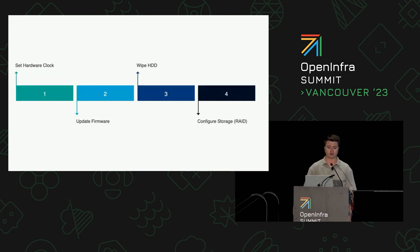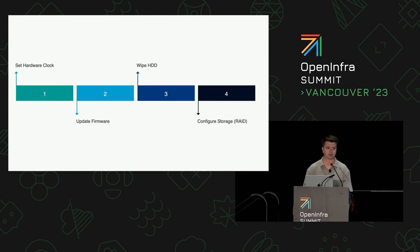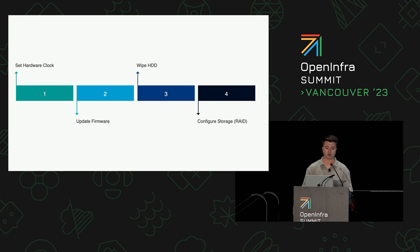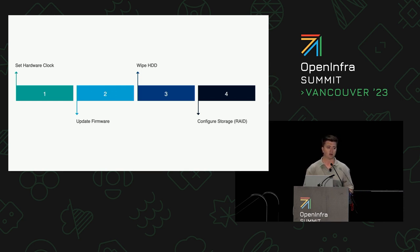Cleaning in Ironic is a set of tasks that allow you to recycle a machine back to a known state. The tasks are ordered by priority — the lower the number, the higher the priority. We've built our own custom hardware manager that allows us to plug in our own cleaning steps without forking the main Ironic code, which is great because maintaining forks is not great when you want to do an upgrade. This allows us to do things like setting the hardware clock and NTP, verifying firmware is as expected, then updating the firmware, and then wiping the hard disks.